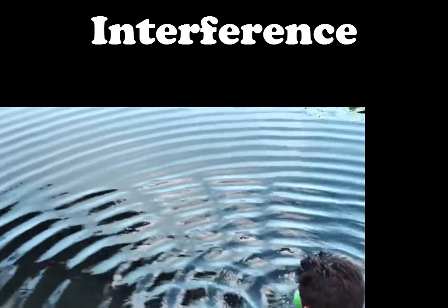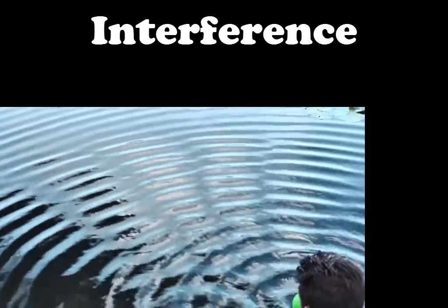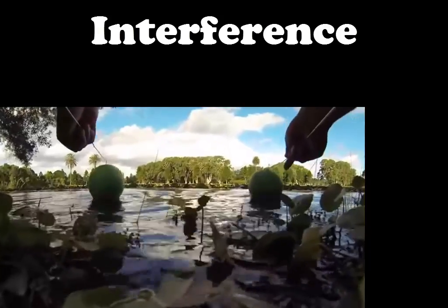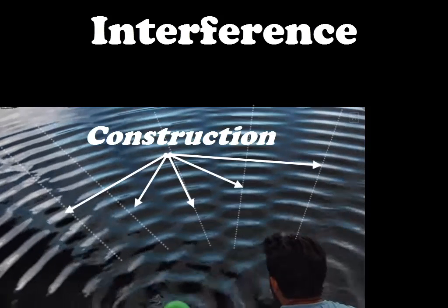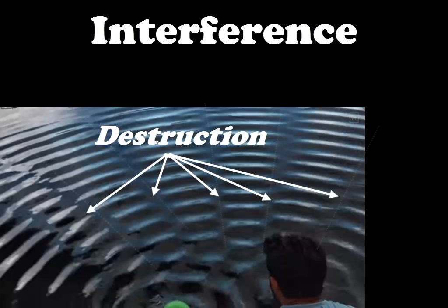A pattern where some places we get the maximas, where the two waves construct each other, the constructive interference, and places where they kill each other, a minima, destructive interference.